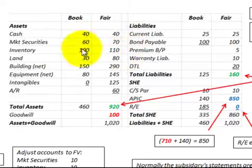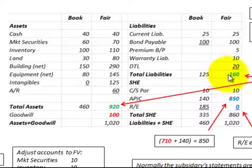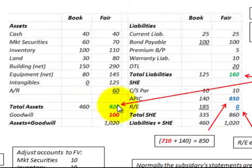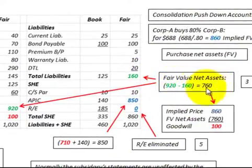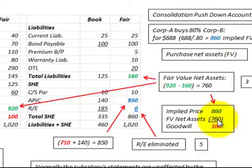Looking at our subsidiary's balance sheet, we have the book value and then the estimated fair value — this is what we're going to adjust the subsidiary's books to. Total assets at fair value are $920,000 and total liabilities at fair value are $160,000, giving us $760,000 for the fair value of net assets. To determine goodwill, we take the implied price of the subsidiary at $860,000 less the fair value of net assets at $760,000, giving us goodwill of $100,000.